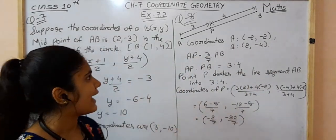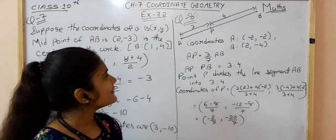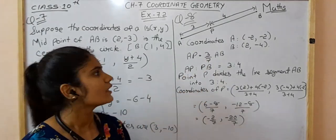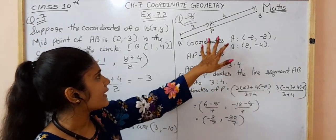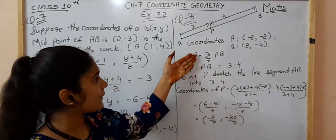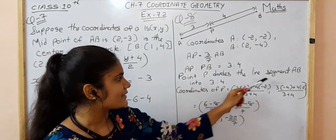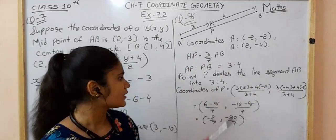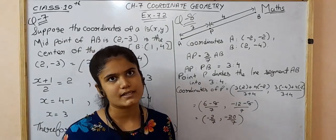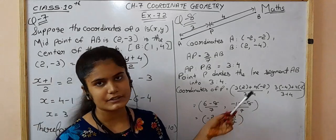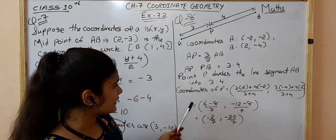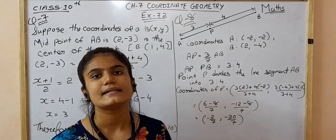In Question 8, line AB is given and it is divided by point P where AP = 3/7 AB. Since AP is 3/7 of the total, point P divides line AB into ratio 3:4, because it is the 3rd part of total 7. So we can use the section formula to find the coordinates of P, using m1 into x2 plus m2 into x1 upon m1 plus m2 for x, and m1 into y2 plus m2 into y1 upon m1 plus m2 for y.